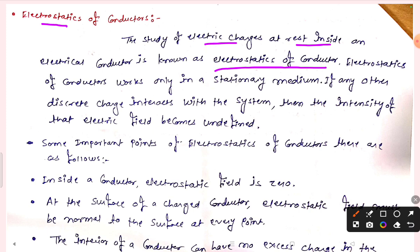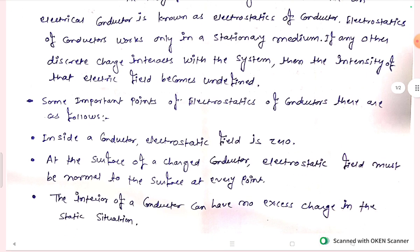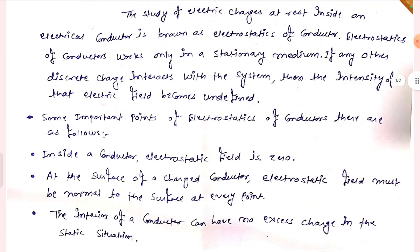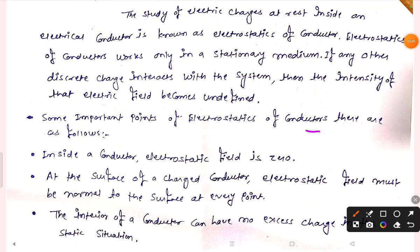In an electrostatic stationary position, if any other discrete charge interacts within the system, then the intensity of the electric field becomes undefined. Some important points of the electrostatic field of a conductor are as follows. First: inside a conductor, the electrostatic field is zero.